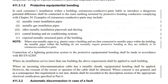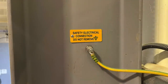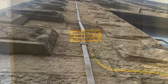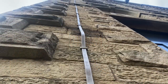Regulation 411.3.1.2 states that in each consumer's installation within a building, extraneous conductive parts liable to introduce a dangerous potential difference shall be connected to the main earthing terminal by protective conductors complying with chapter 54. Examples of extraneous conductive parts include things like metal water pipes, metal gas pipes, structural steel, lightning protection conductors, oil heating pipes, and so on.